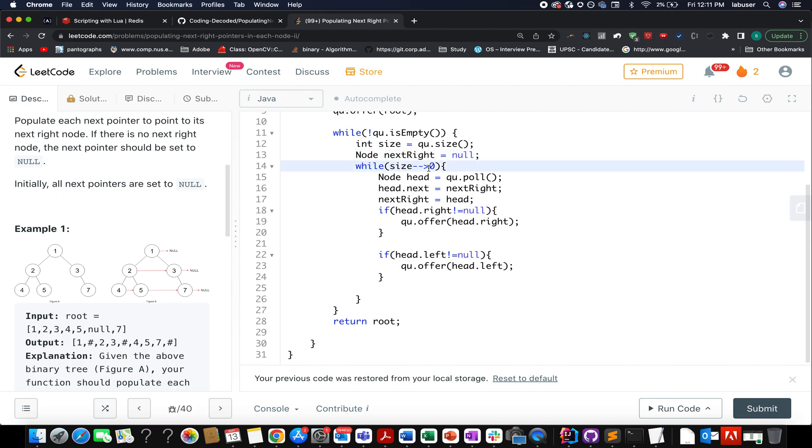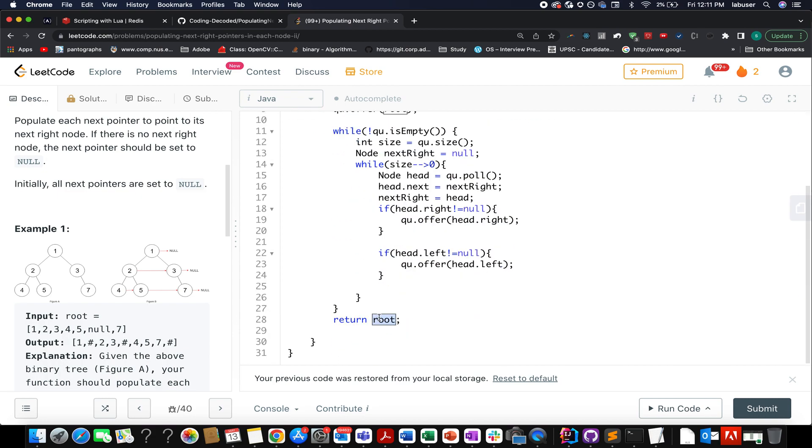So while size minus minus is greater than zero, I extract the topmost element from the queue. And I update head.next to the next right node that I have created. Along with this, I simply update my next right to head. And in case my head.right is not null, I add it into the queue. If my head.left is not null, I add it into the queue. Once I'm done with this iteration, I simply return the root of my updated binary tree.